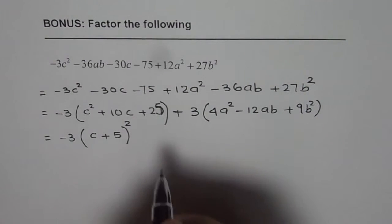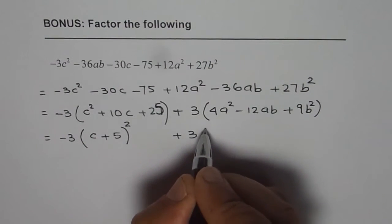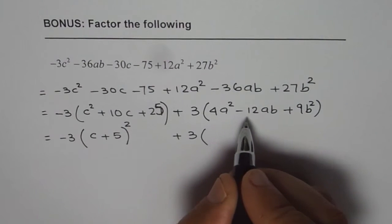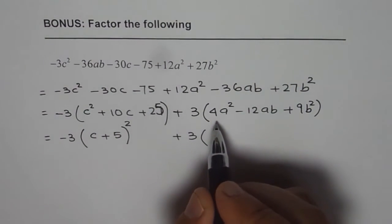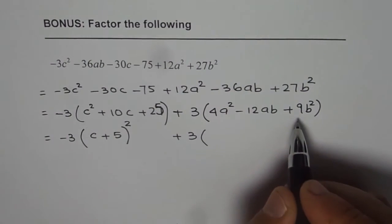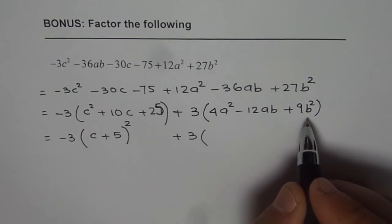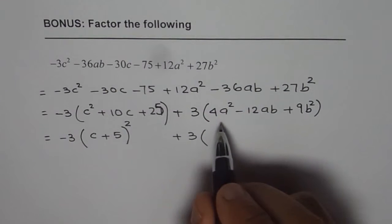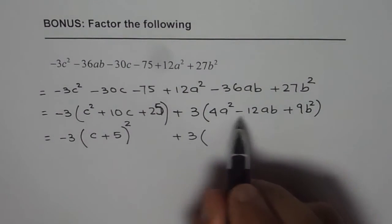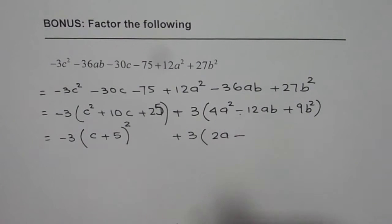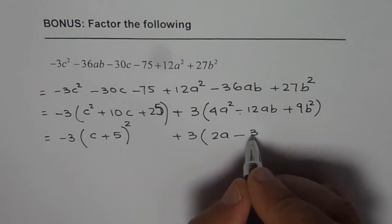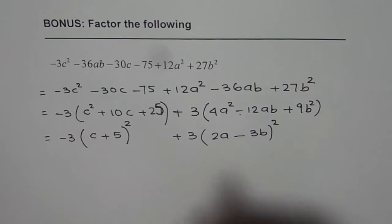How about the next term? In the next term we have 4a square minus 12ab plus 9b square. Now 4a square is 2a square, 3b whole square. And this term is twice these two. So that could be written as 2a minus 3b whole square because the center term is minus.